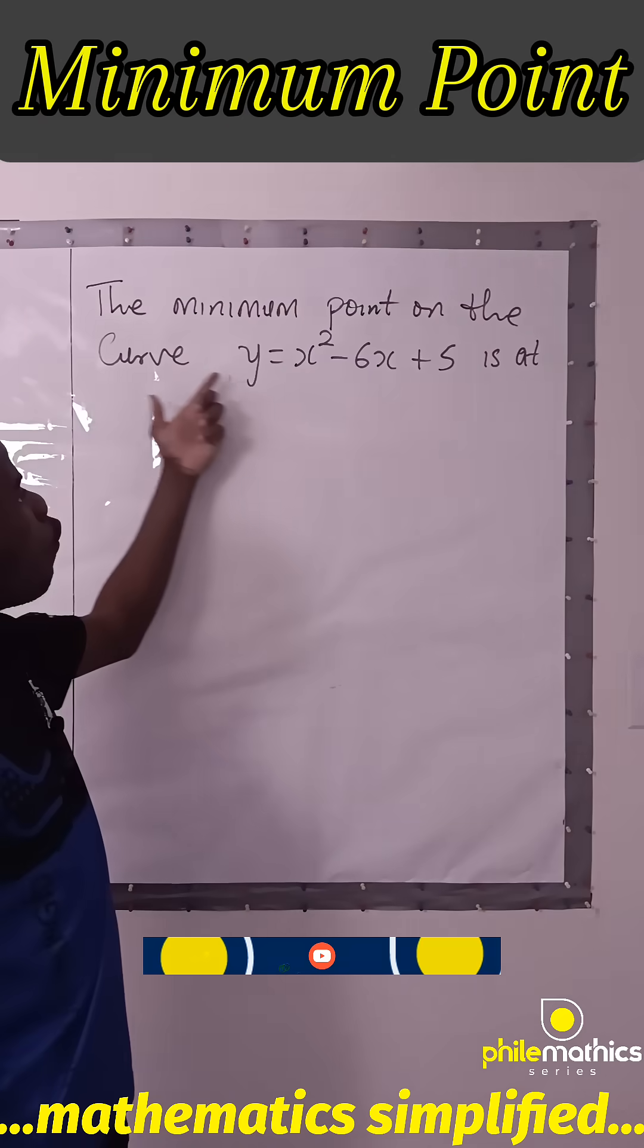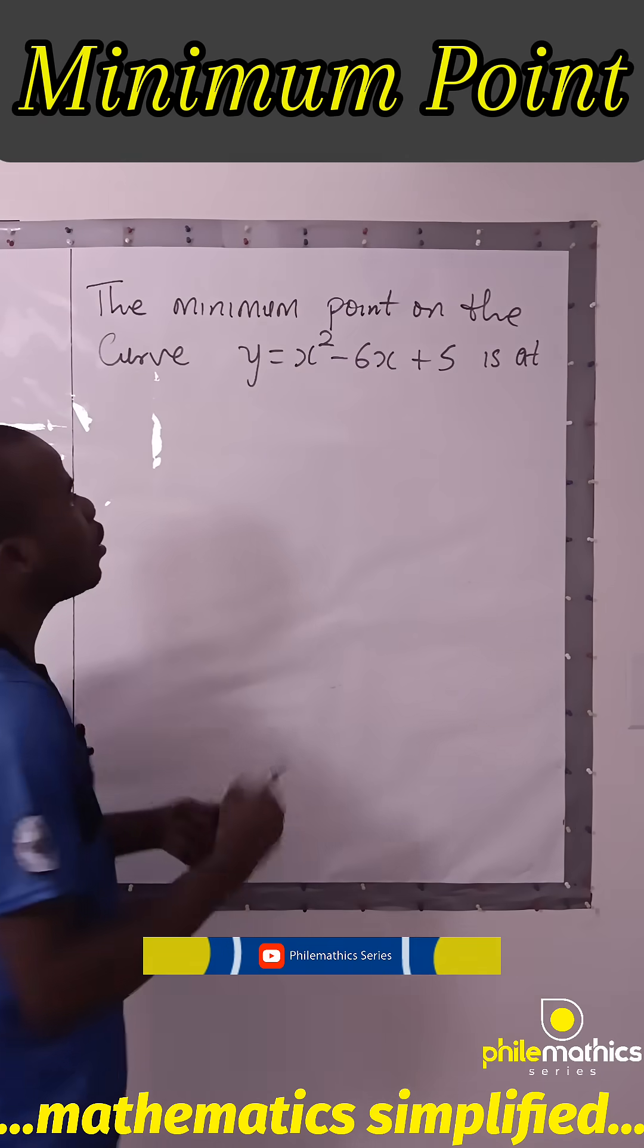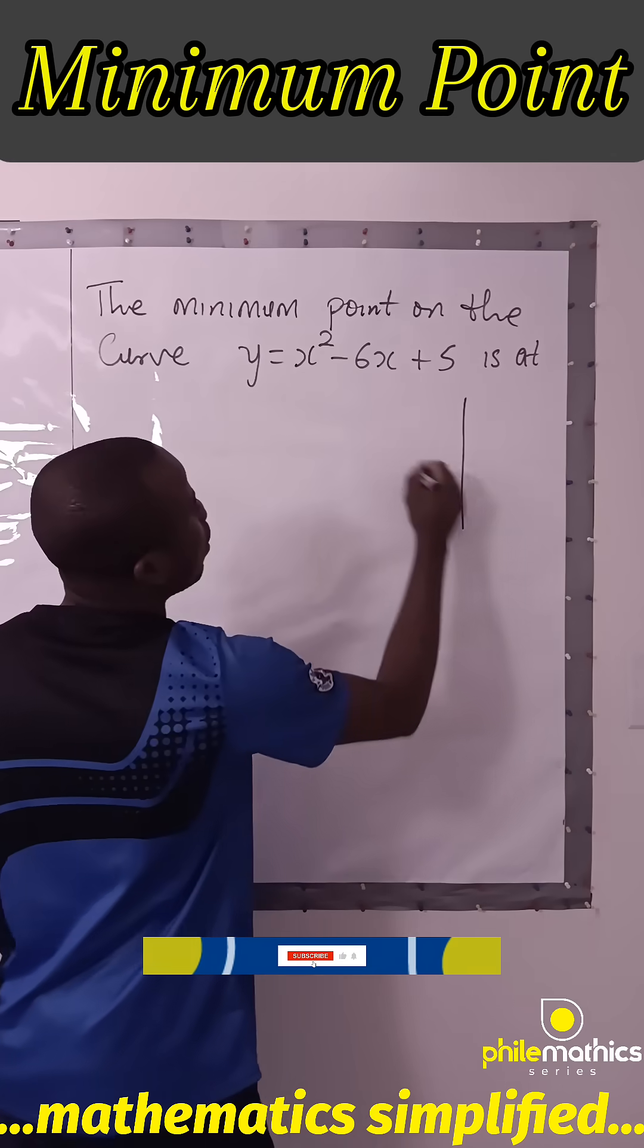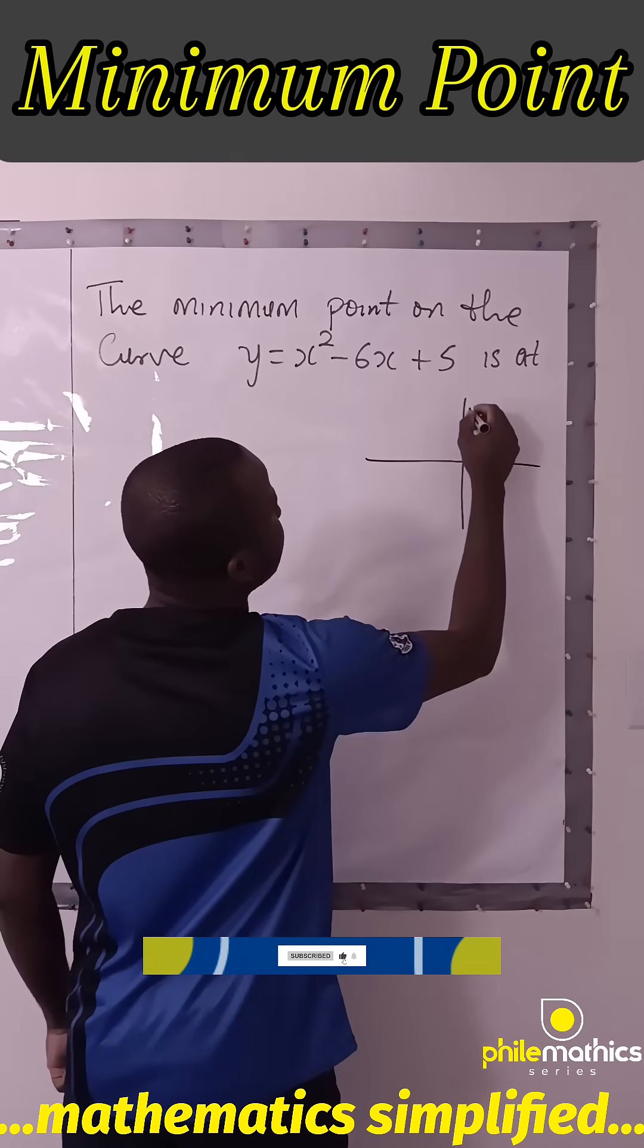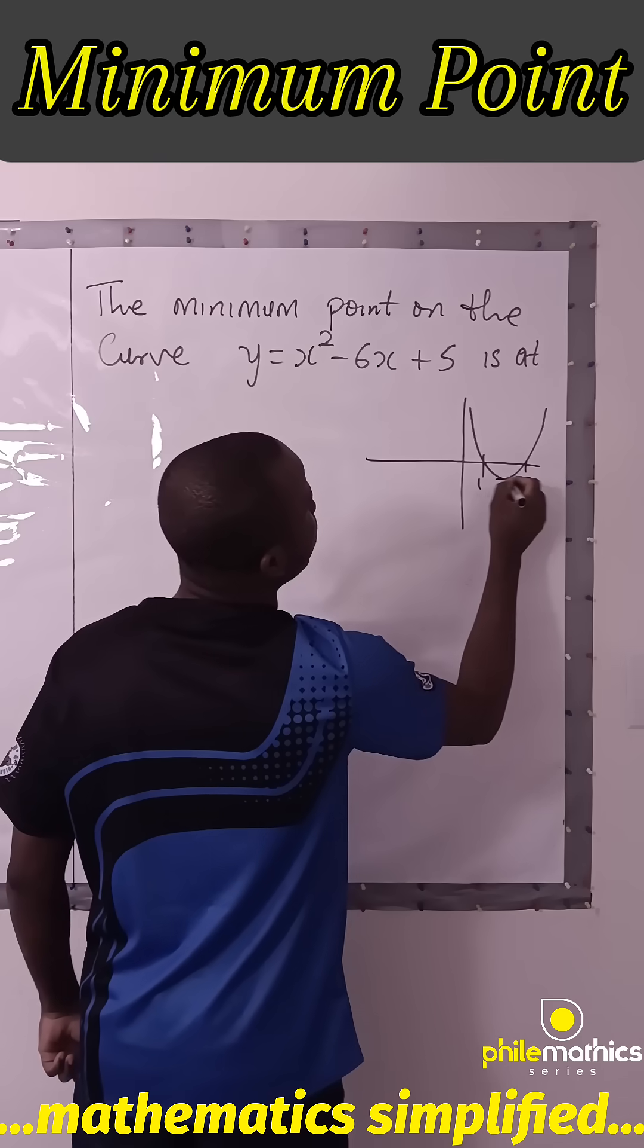The minimum point on the curve y equals x squared minus 6x plus 5 is at... If you look at this quadratic equation, it is like this where this is 1 and this is 5. We're looking for this minimum point.